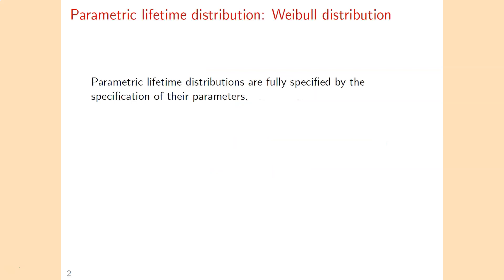The Weibull distribution is a parametric lifetime distribution. Parametric lifetime distributions are fully specified by their parameters. For instance, the normal distribution is specified by its mean and its standard deviation.